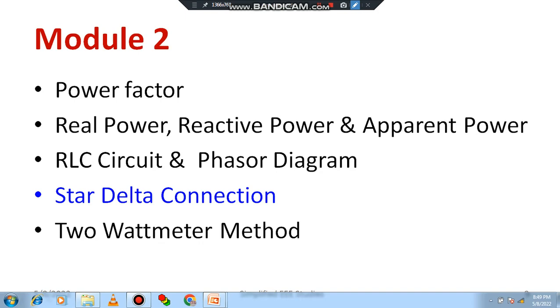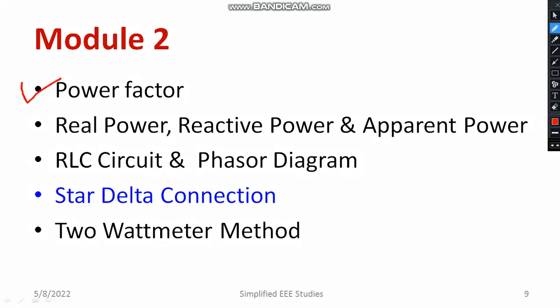Regarding module 2, you need to learn the three important definitions of power factor and the power triangle basics — real power, reactive power, and apparent power. Studying this will also help in the basic electrical engineering laboratory. You need to know the fundamentals of RLC circuit and how to solve numerical examples. Star and delta connection is very, very essential — please don't leave it.